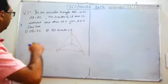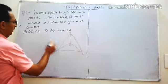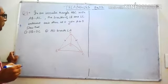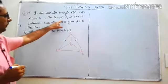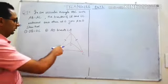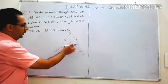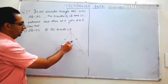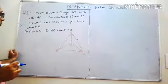We have an isosceles triangle ABC with AB and AC these two sides are equal. The bisectors of angle B and angle C — OB is the bisector of angle B and OC is the bisector of angle C — and they meet each other.